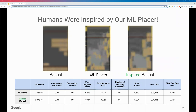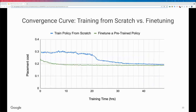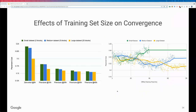Rob asks for clarification: are you training a neural network? Yongjun confirms yes. Rob then asks how deep and wide the network is. Yongjun says details on the number of layers and sizes can be seen in the slides showing the evolution of the architecture.